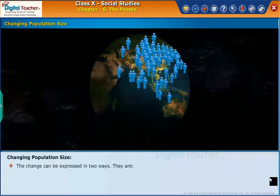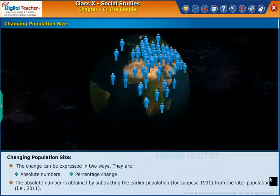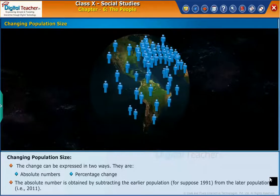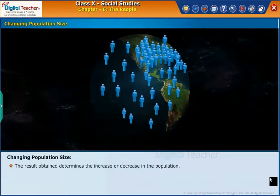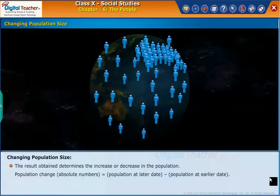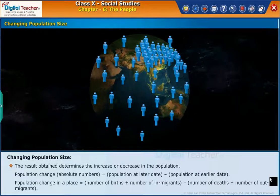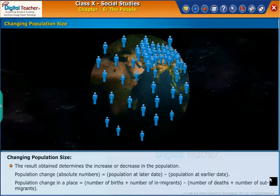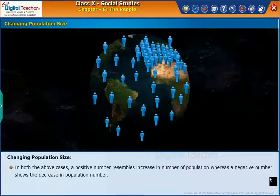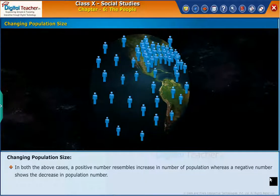The change can be expressed in two ways: absolute numbers and percentage change. The absolute number is obtained by subtracting the earlier population, for example 1991, from the later population, that is 2011. The result obtained determines the increase or decrease in the population. Population change in absolute numbers is equal to population at later date minus population at earlier date. Population change in a place is equal to number of births plus number of in-migrants minus number of deaths plus number of out-migrants. In both cases, a positive number indicates an increase in population whereas a negative number shows a decrease in population.